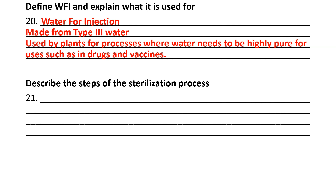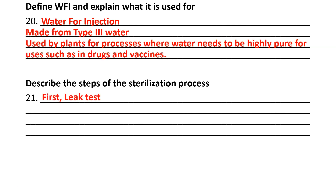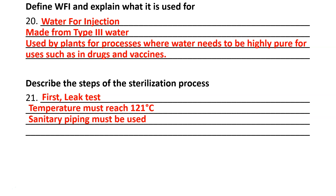Describe the steps of the sterilization process. First, you need to do a leak test — make sure there's no leaking occurring from the device. You must make sure the temperature reaches 121 degrees Celsius, which is very important for anything to be considered sterile, often at 15 psi gauge as well. Sanitary piping must be used, which means stainless steel and several other requirements: it cannot be flat, no 90-degree or sharp bends, and no places where liquid can collect and stagnate.